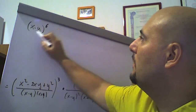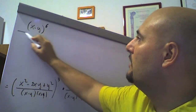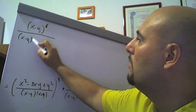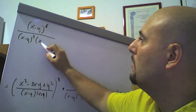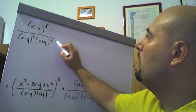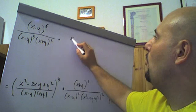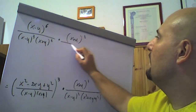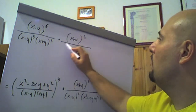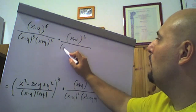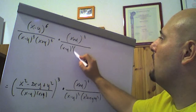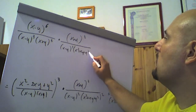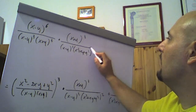Diviso che cosa? Diviso (x meno y) al cubo per (x più y) al cubo, che moltiplica (x più y) al cubo fratto (x meno y) al quadrato per (x quadro più xy più y quadro) al quadrato.